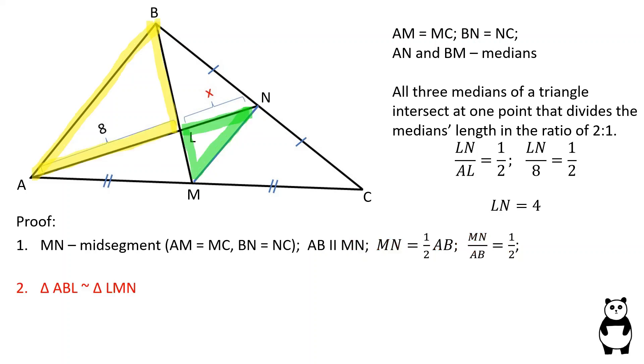Triangles ABL and LMN are similar because two pairs of corresponding angles are equal. Since AB is parallel to MN, the pair of green angles are alternate angles and therefore are equal to each other, and the pair of orange angles are also alternate angles.